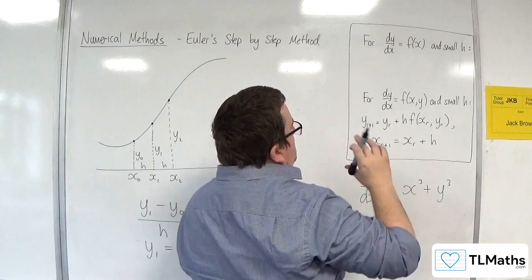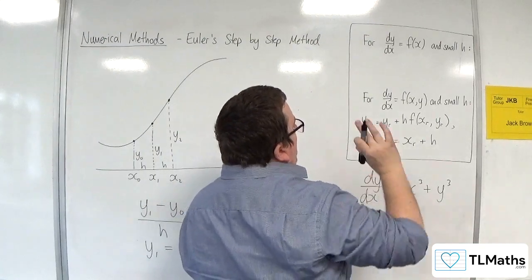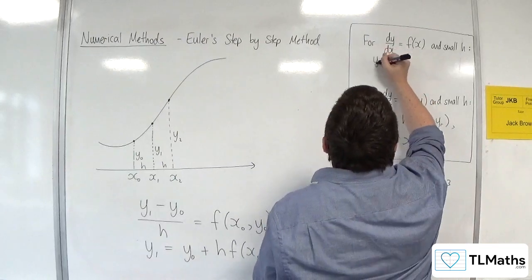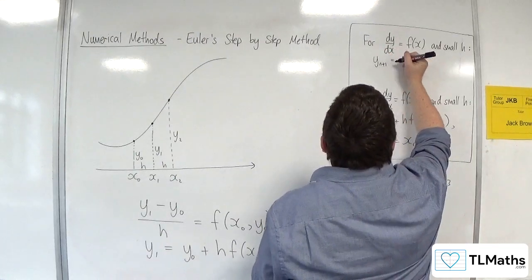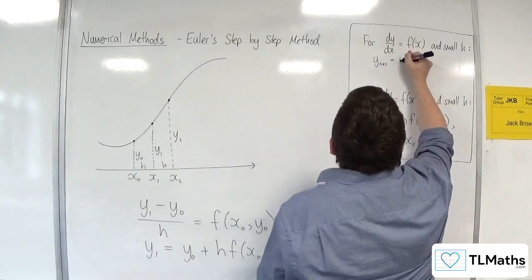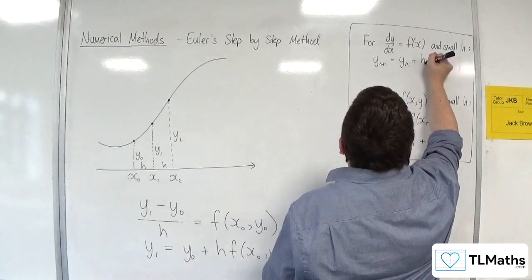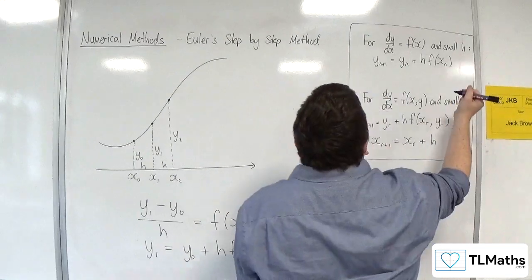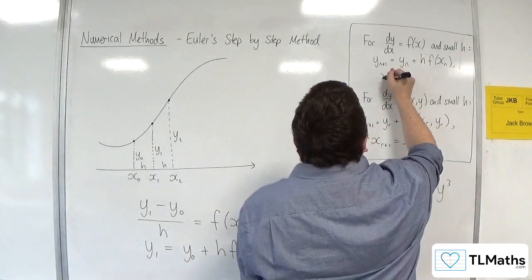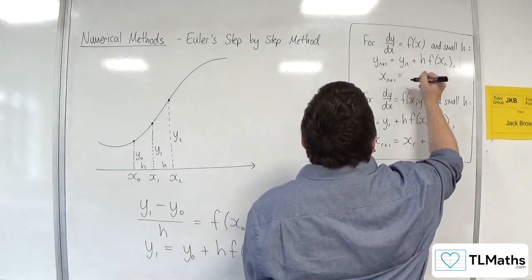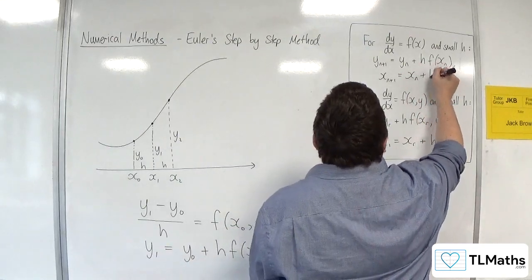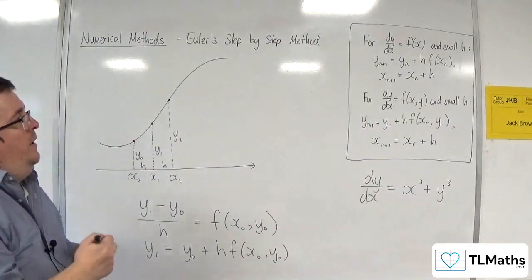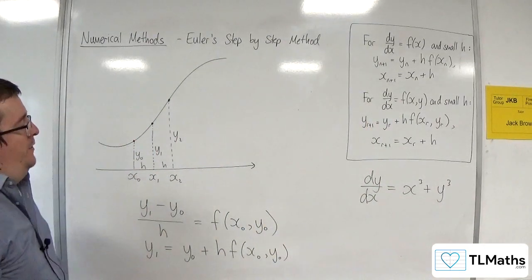So, we've done it for the f of x y's. Right? It's exactly the same derivation for this one as well. Now, just to make it clear that it's a different looking formula, the formula booklet uses n. So, yn plus 1. But that's fine. It doesn't matter. It's yn plus h times f of xn. Where xn plus 1, the next x term is xn plus h. Okay? So, this is Euler's step-by-step method.